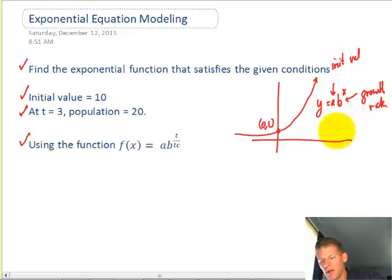b would be the growth rate. So if b is greater than 1, you have growth. And if b is between 0 and 1, you have decay.